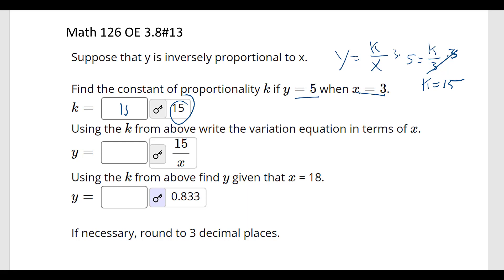Let's look at the 15. And so using k from above, write the variation equation in terms of x. As we saw, it's 15 over x.